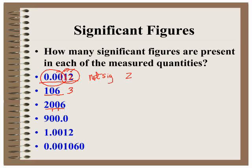In the next measurement, the zeros are part of the measurement, so there are four total significant figures. In this number, the nine is certainly significant. The zeros that follow the non-zero digit, and this zero following a decimal — therefore all four numbers are significant. For the next example, captive zeros give us one, two, three, four, five significant figures.